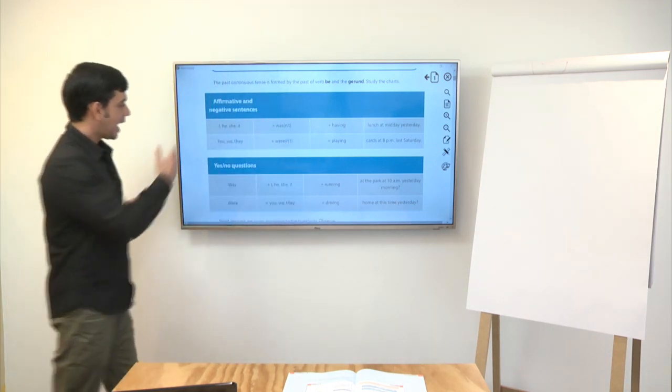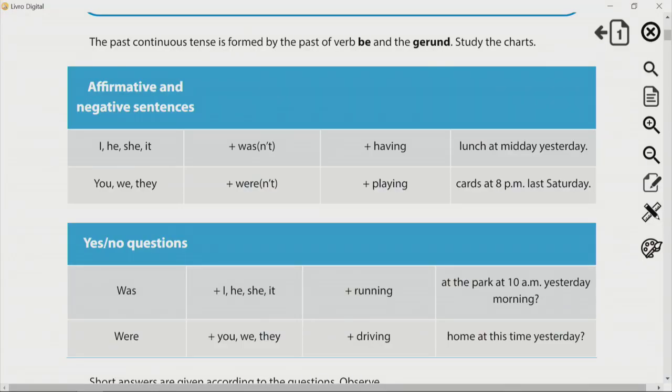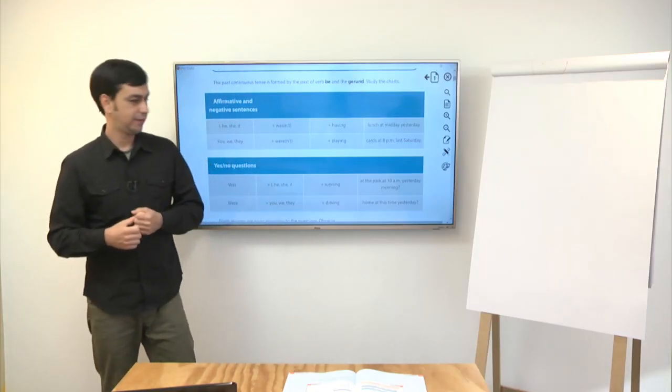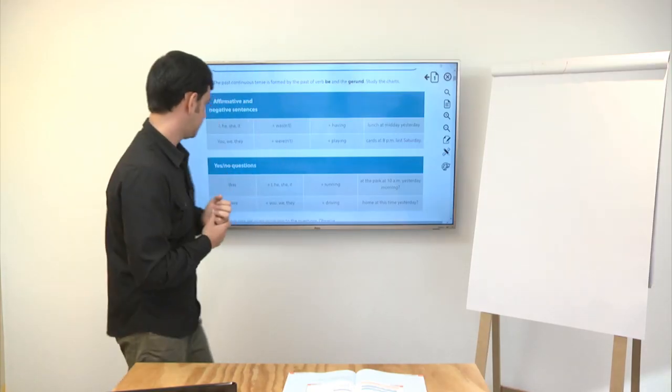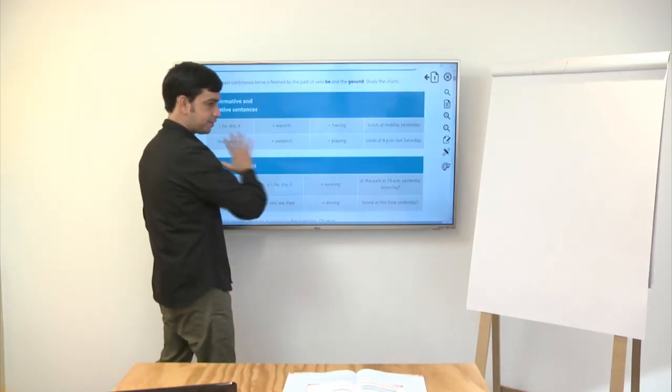Então, eu tenho lá. Pra I, pra he, pra she, pra it, eu vou usar o verbo to be no passado was. Na negativa, fica wasn't. Pra you, pra we e pra they, o verbo to be no passado fica were. Na negativa, weren't. Aí, o verbo com ing e o complemento. Então, o primeiro exemplo. I was having lunch at midday yesterday. We were, ou weren't, playing cards at 8pm last Saturday. Então, aqui, frases afirmativas. Afirmativas e negativas.